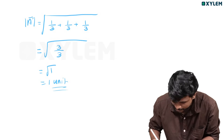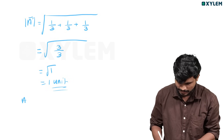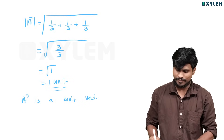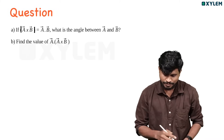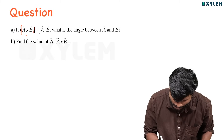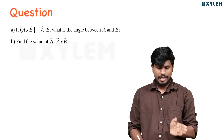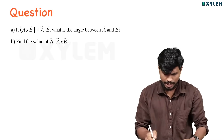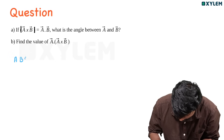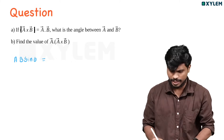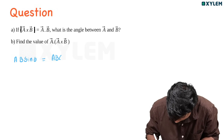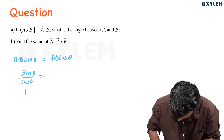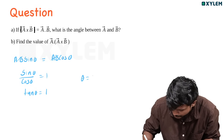Now, given vector A, the unit vector in direction A is A hat. If vector A is a unit vector, then modulus of A cross B equals A sin theta, and A dot B equals A cos theta. So sin theta by cos theta equals tan theta equals 1, and therefore theta equals 45 degrees.